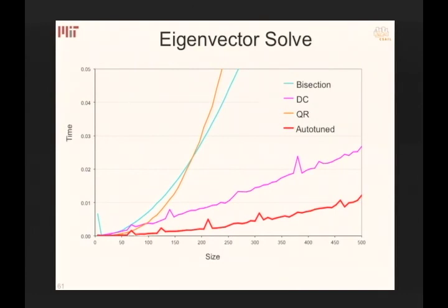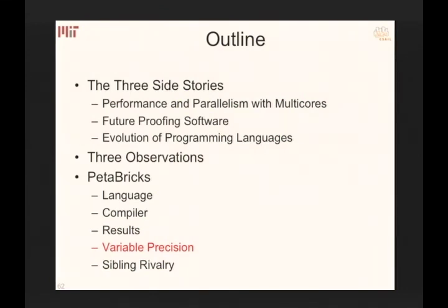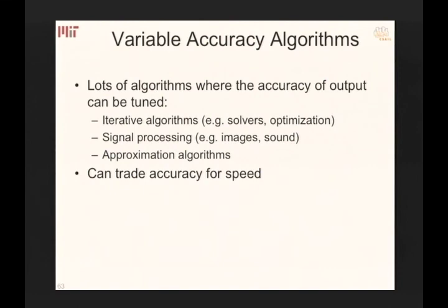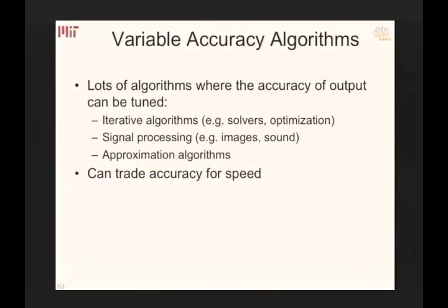Now I want to talk about two extensions, starting with variable accuracy. We're used to a world where algorithms give one result. But the world has shades of gray — iterative algorithms stop when 'good enough,' signal processing has subjective quality thresholds, and approximate algorithms trade accuracy for speed. Most users really want: achieve a certain accuracy as fast as possible, or given a certain time, maximize accuracy. This accuracy-speed trade-off needs to be expressible in the language.